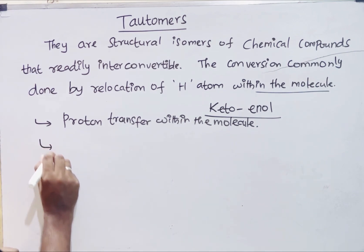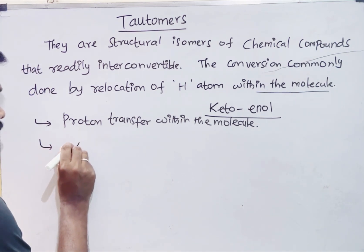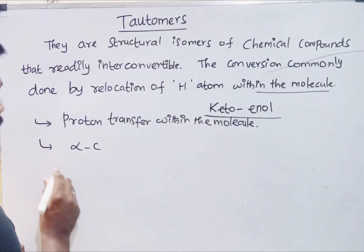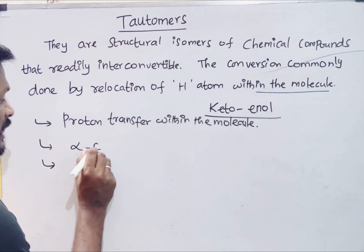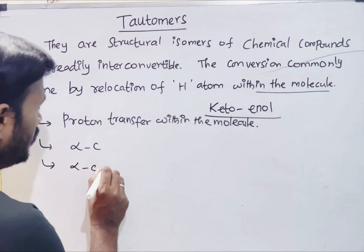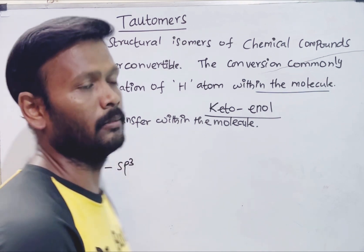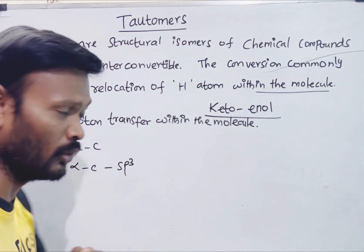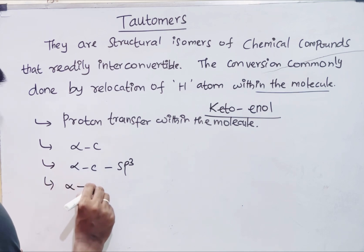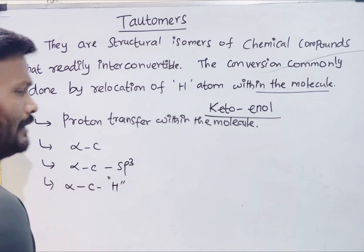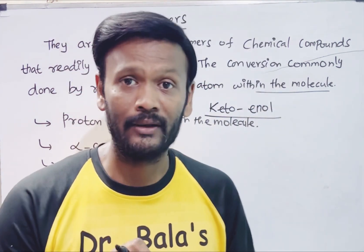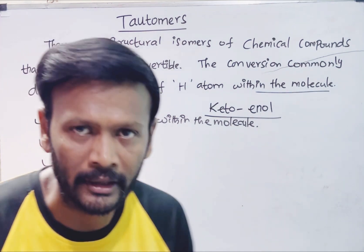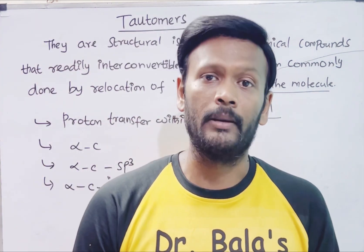The second condition is alpha carbon. Alpha carbon must be present. If you have alpha carbon, it should be sp3 hybridized carbon. Alpha carbon is sp3 hybridized. Alpha carbon must have at least one hydrogen. Proton transfer within the molecule — hydrogen on alpha carbon. This is the second condition and the third condition.